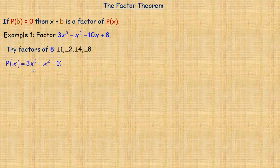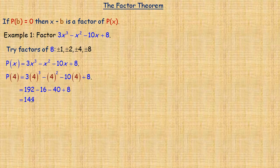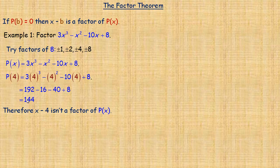Let's write out our polynomial and pick a number randomly — I'm going to use 4. So we are checking to see if x minus 4 gives a remainder of 0. If we calculate p of 4: 4 cubed times 3 is 192, 4 squared is 16, 10 times 4 is 40, plus 8 — if you evaluate that, you get 144. So the remainder isn't 0, which implies that x minus 4 is not a factor of the polynomial.